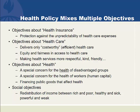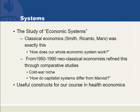Finally, unrelated to health, there might be a general social objective to redistribute income between the rich and the poor, between the healthy and the sick, between the powerful and the weak. This redistributive objective can be mixed in with objectives about health care. So let's move on to the study of systems and talk about how one defines a health system.